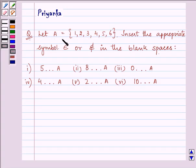It says let A equals 1, 2, 3, 4, 5, 6. These are the elements of set A. Insert the appropriate symbol belongs to or does not belong to in the blank spaces. Now these are the six parts of the question which are given to us and we are given set A.